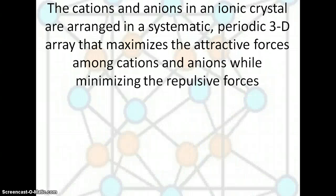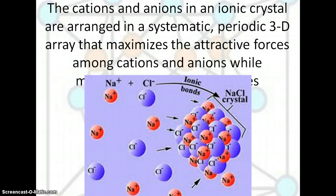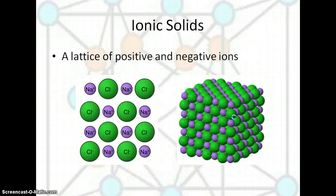They arrange themselves in this structure so that they maximize the attractive forces, and they minimize the repulsive forces. Here we have another picture. We see them all closely stacking together again. Here we have our ions, and they form these ionic bonds, and then further form the ionic crystal, the NaCl crystal. You're going to get a lattice that has positive and negative ions closely packed together.